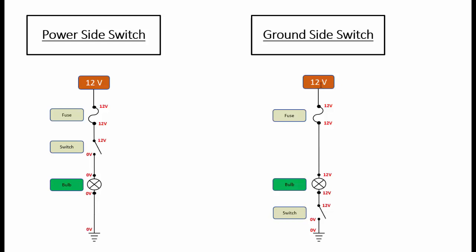On the ground side switch you would actually have 12 volts all the way down to the bulb and on the ground side of the bulb and all the way up to the tip of the switch even when the circuit is off.